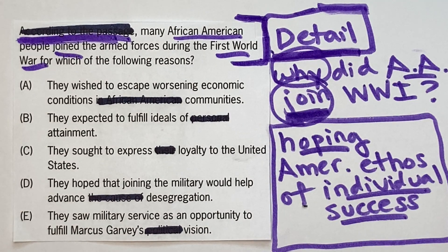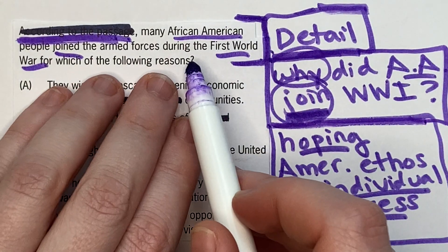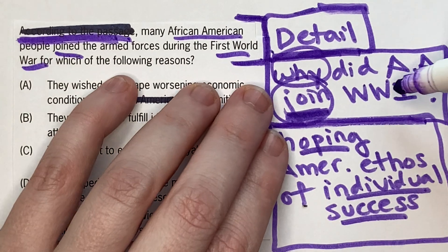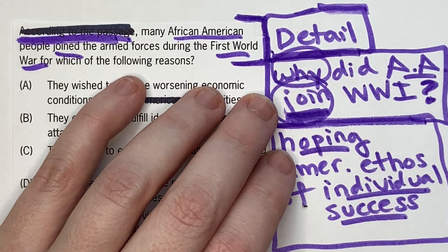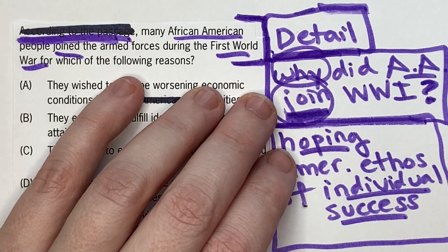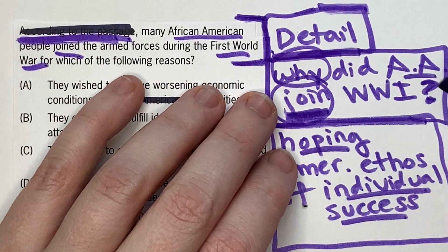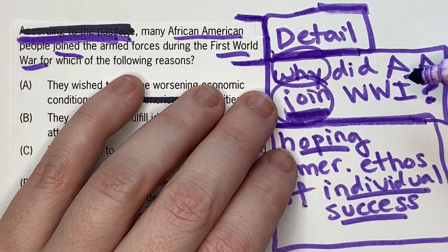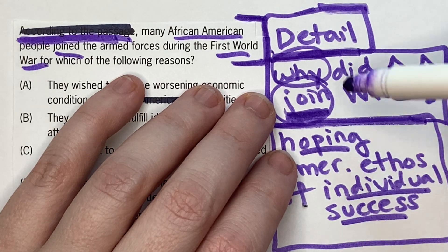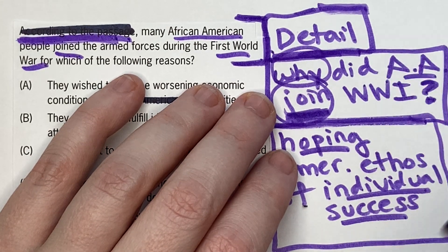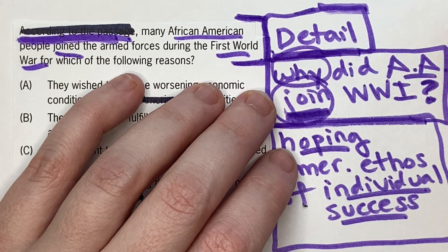The next thing you want on your scratch paper is a rephrase of the question stem. Read the question stem, then put it in your own words on your scratch paper — keep it as a question, but make it more straightforward and simple. This ensures you really understand what the question is asking. Some people only do this for question stems that seem wordy and difficult, but I recommend doing it for every single reading comp question as you practice.